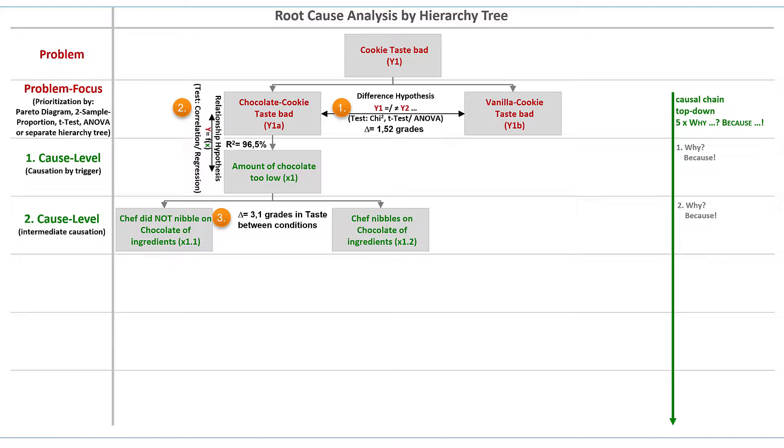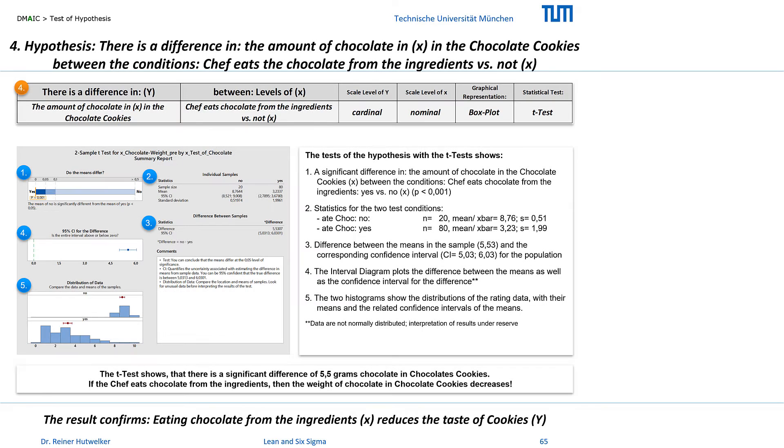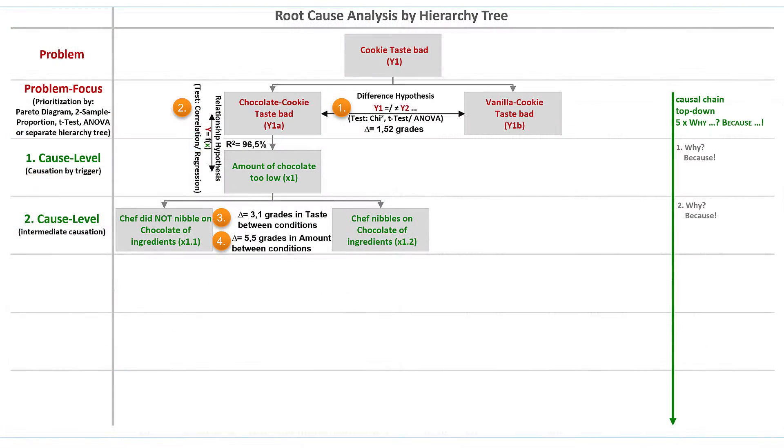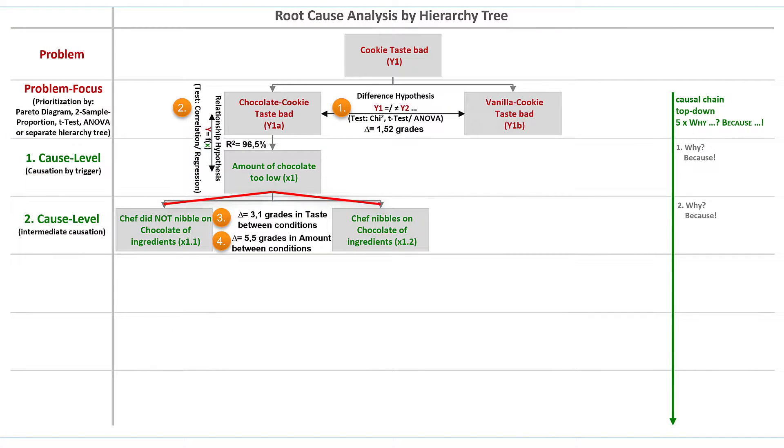For me this result has two consequences. I spontaneously formulate the hypothesis: there is a difference in the amount of chocolate in the cookies between the conditions chef nibbles chocolate versus not. The evaluation of the existing data with the t-test directly in the workshop again shows a significant result. And with 5.5 rating points difference between the conditions, the result is also practically relevant. The chef's nibbling has a significant and relevant effect on the amount of chocolate in the cookies. This confirms my previous analysis.